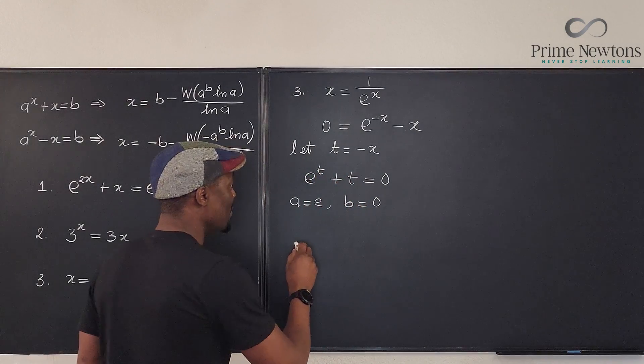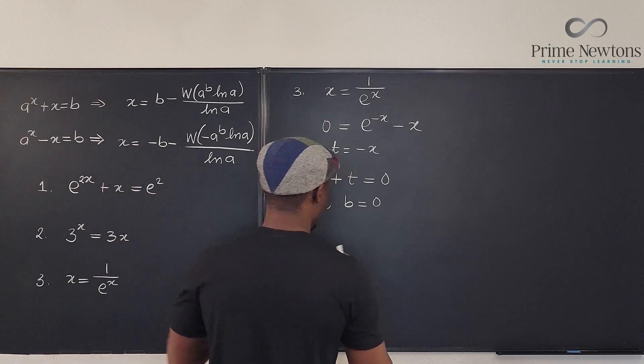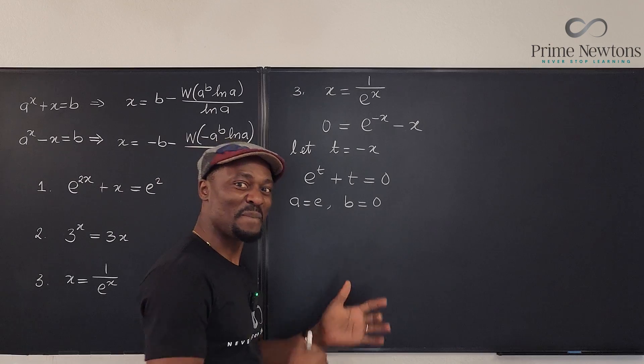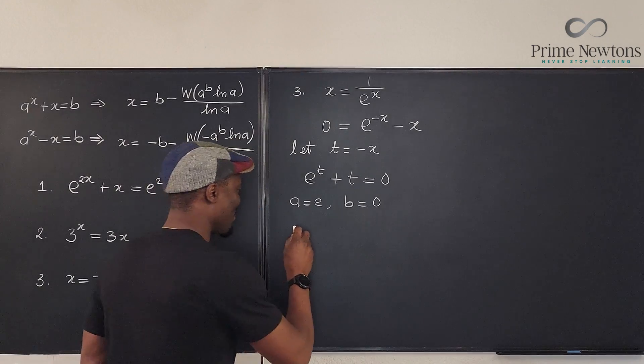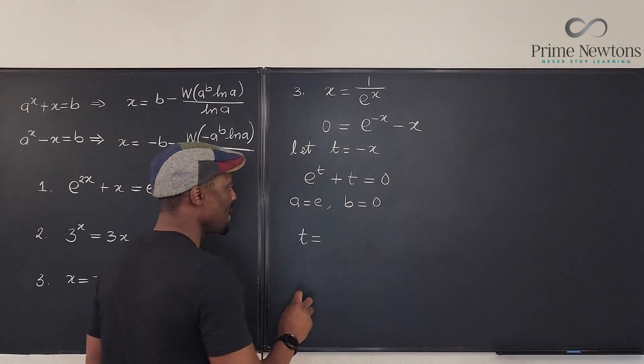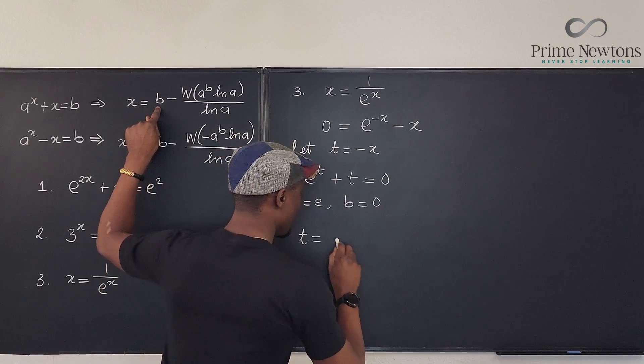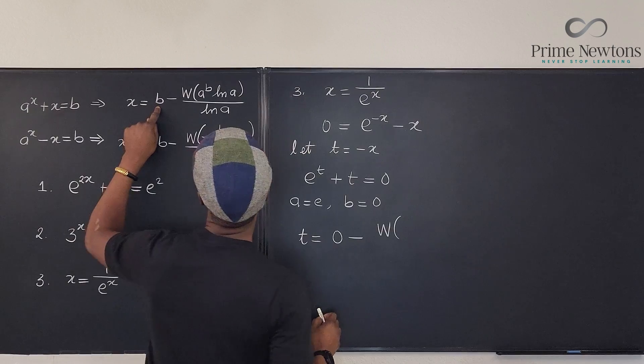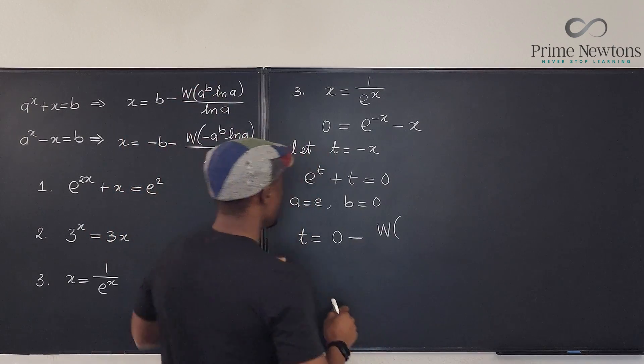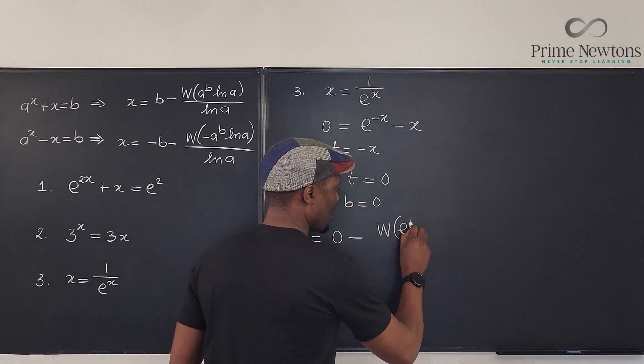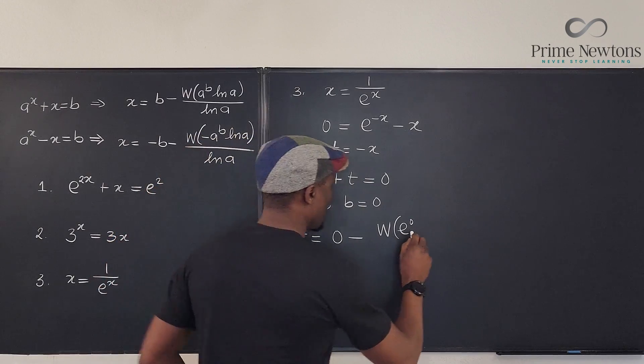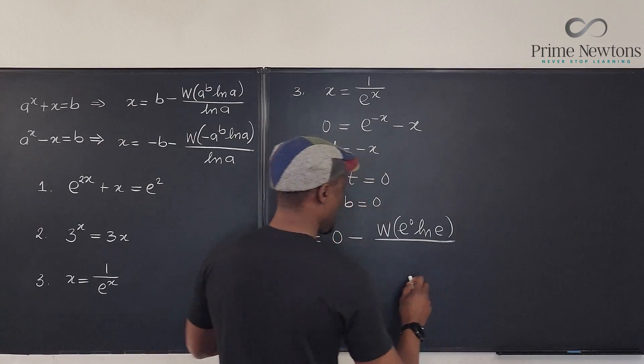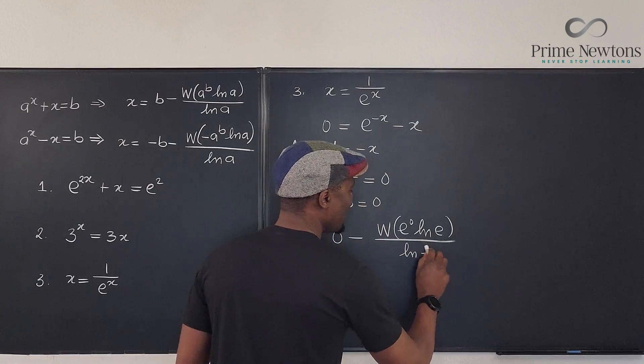So, we can say our answer using the formula. This same formula is what we're using. I thought we were going to need to use the other formula. But with this smart substitution, we don't have to. So, we've got t will be equal to b, which is zero minus the w of a raised to power b, which is going to be e raised to power zero, natural log of a, natural log of e over the natural log of e. This is so easy. Oh, it was easier than what I was thinking. Come on!